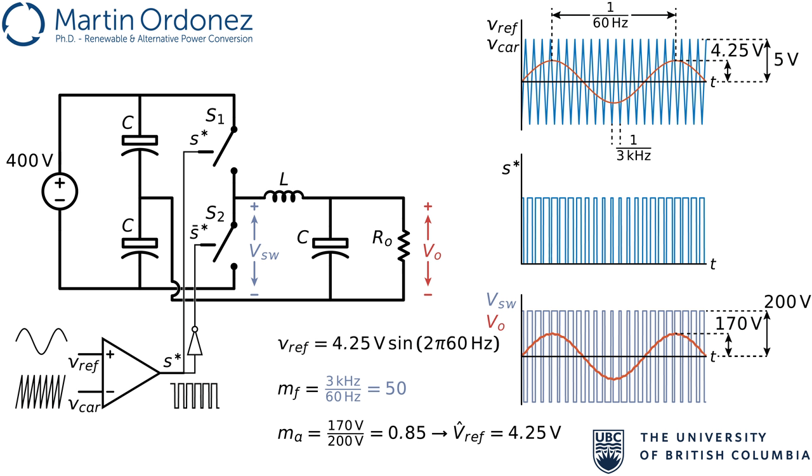As an example, consider what happens if V in drops to 380 volts, for example, if the batteries lose some charge. To maintain V out, we need to increase MA to 0.9, which means VREF should be 4.5 volts. In general, this is implemented as a control loop that regulates V out automatically.